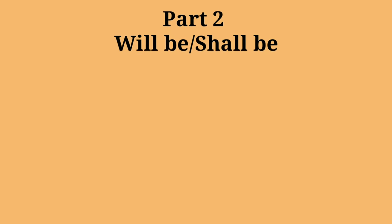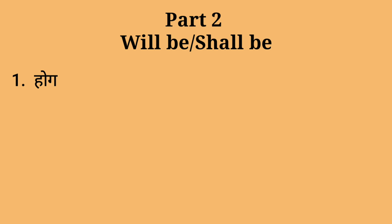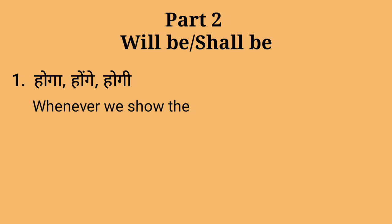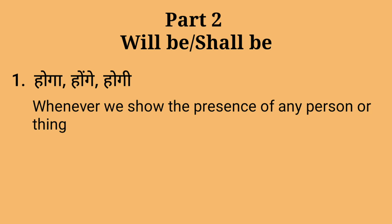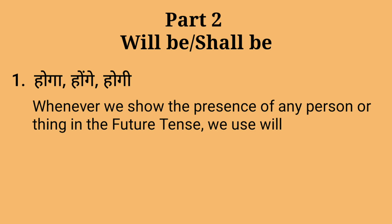Second part of will be and shall be. First point is: Hoga, honge, hogi. Whenever we show the presence of any person or thing in the future tense, we use will be or shall be there. There is no action in it.